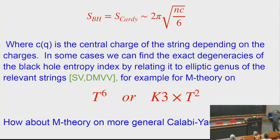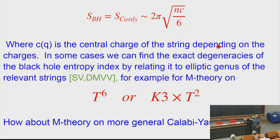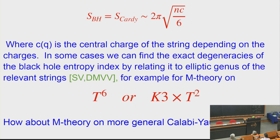The central charge of the string depends on the charges it carries. In some cases, one can do better and actually account for the exact degeneracy of the black hole entropy index, not just asymptotically. The black hole entropy index is relevant when we have a supersymmetric black hole — it's an invariant that is simpler to compute. A priori it is smaller in absolute value than the entropy due to possible cancellations, but typically we find no cancellations at leading order, and this works nicely.